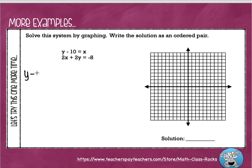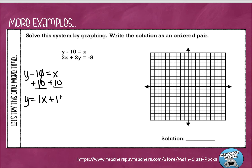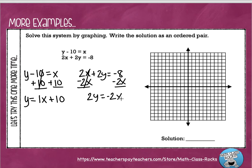For the second problem, I'll solve both equations for y first. The first equation is y minus 10 equals x — adding 10 to each side gives y equals x plus 10, or y equals 1x plus 10. The second equation is 2x plus 2y equals negative 8. Subtracting 2x gives 2y equals negative 2x minus 8, then dividing by 2 gives y equals negative 1x minus 4.